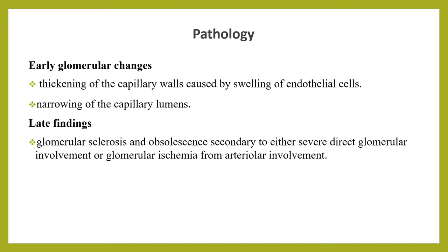When we see the pathology, renal biopsies are only rarely performed in HUS because the diagnosis is usually established by clinical criteria, and the risk of biopsy is significant during the active phase. Early glomerular changes include thickening of the glomerular capillary walls caused by swelling of endothelial cells and accumulation of fibrillar material between endothelial cells and the underlying basement membrane, causing narrowing of capillary lumens. Platelet-fibrin thrombi are often seen in glomerular capillaries and in afferent arterioles and small arteries, with fibrinoid necrosis of the arterial wall, leading to renal cortical necrosis from vascular occlusion. Late findings include glomerular sclerosis and obsolescence secondary to severe direct glomerular involvement or ischemia.